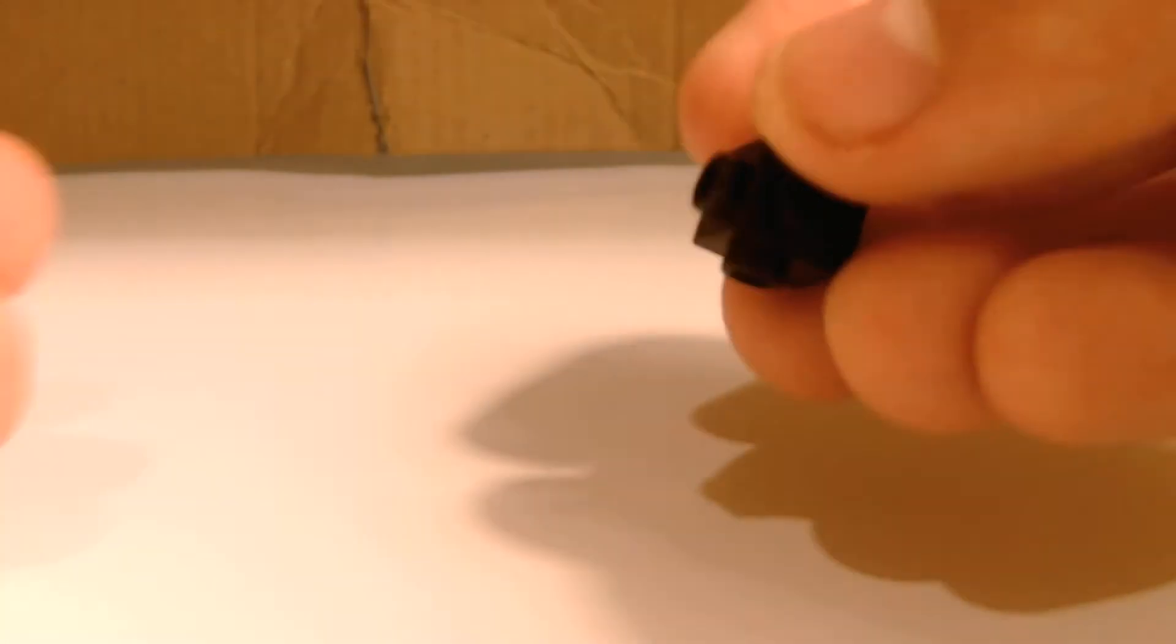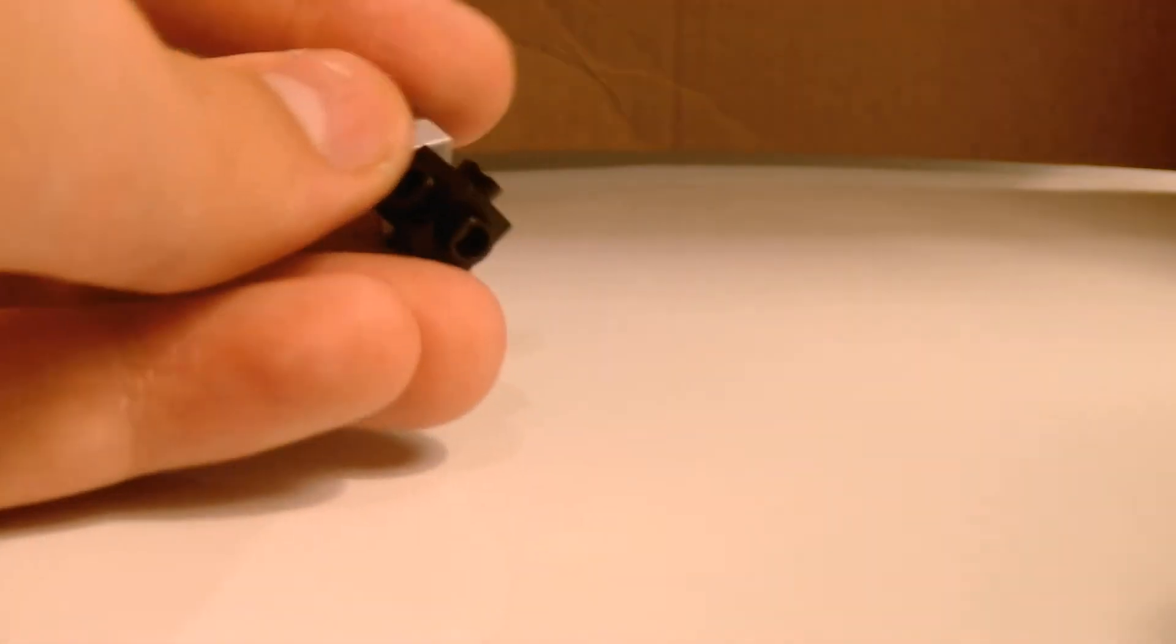First, what you want to do is you want to take the one-by-one and the neck attachment, and you want to stick it like this. And then you want to make it diagonal. Once it's diagonal and as straight as you can possibly get it.